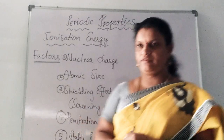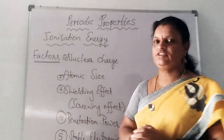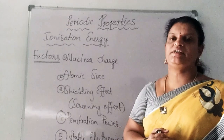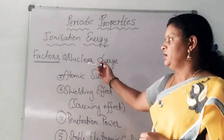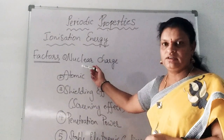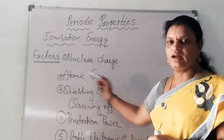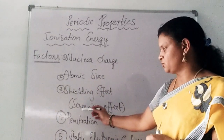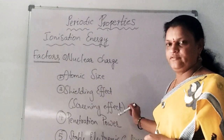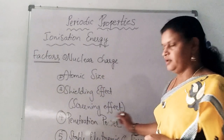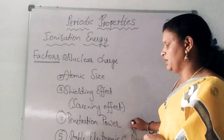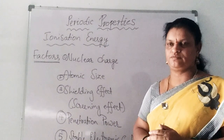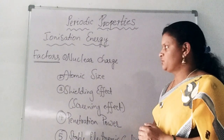The factors affecting ionization energy are: nuclear charge, atomic size, shielding effect (also called screening effect), penetration power, and the last one — stable electronic configuration.